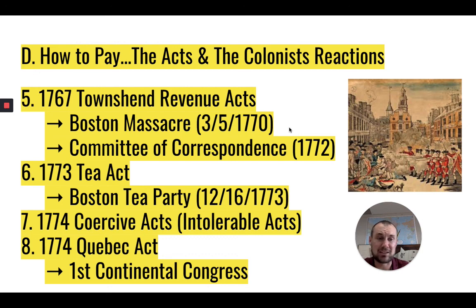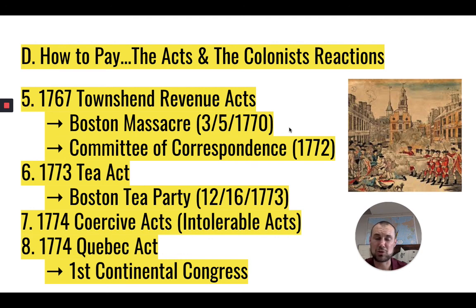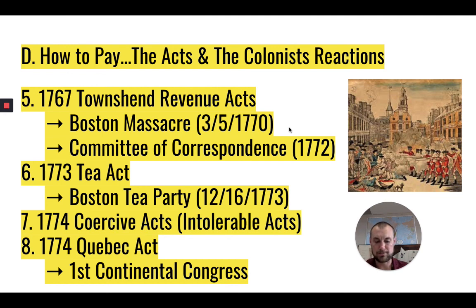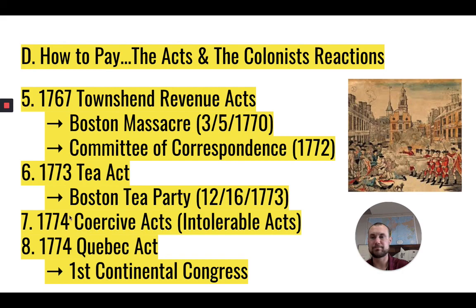Britain came down hard on the colonists with the Coercive Acts, or what we call the Intolerable Acts. Basically, they took away Massachusetts' government representation in the colony, closed Boston Harbor, said British soldiers could stay with whoever they wanted whenever they wanted, and said British officials — if they did something wrong — would be tried in Britain, not the colonies. The Quebec Act was also part of that, making five acts total. But what this brought about was the First Continental Congress — and that's where we'll pick up in the next lecture on Monday.